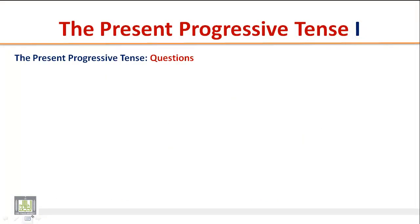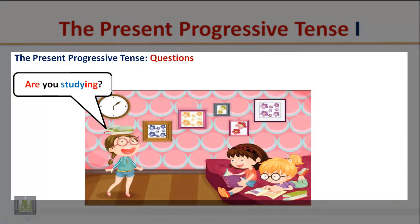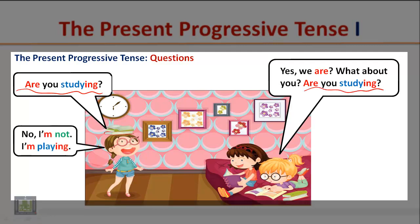The Present Progressive Tense: Questions. Listen to the following short conversation and pay attention to word order in questions. 'Are you studying?' 'Yes, we are. What about you? Are you studying?' 'No, I'm not. I'm playing.'